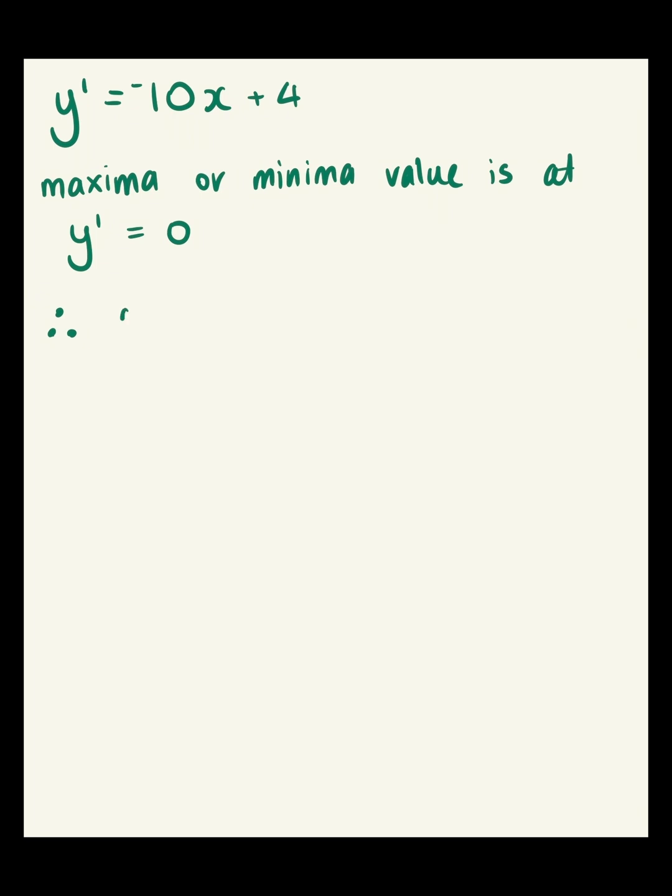So that means the first derivative of y is going to equal 0. When we put that into our calculation, it's going to read as 0 equals negative 10x plus 4. And we want to solve for x now to get our maxima value.